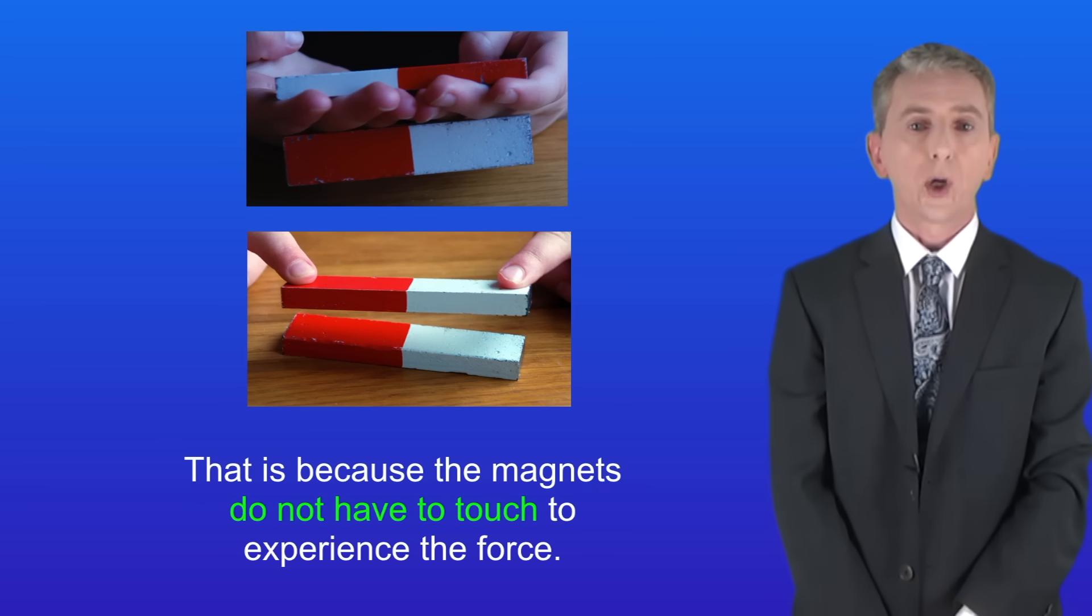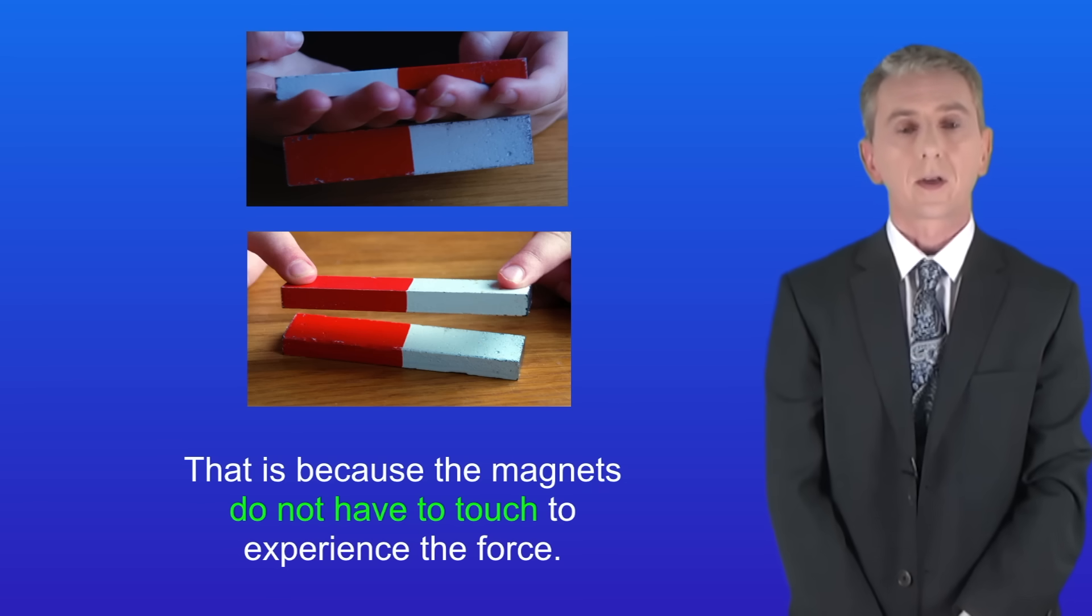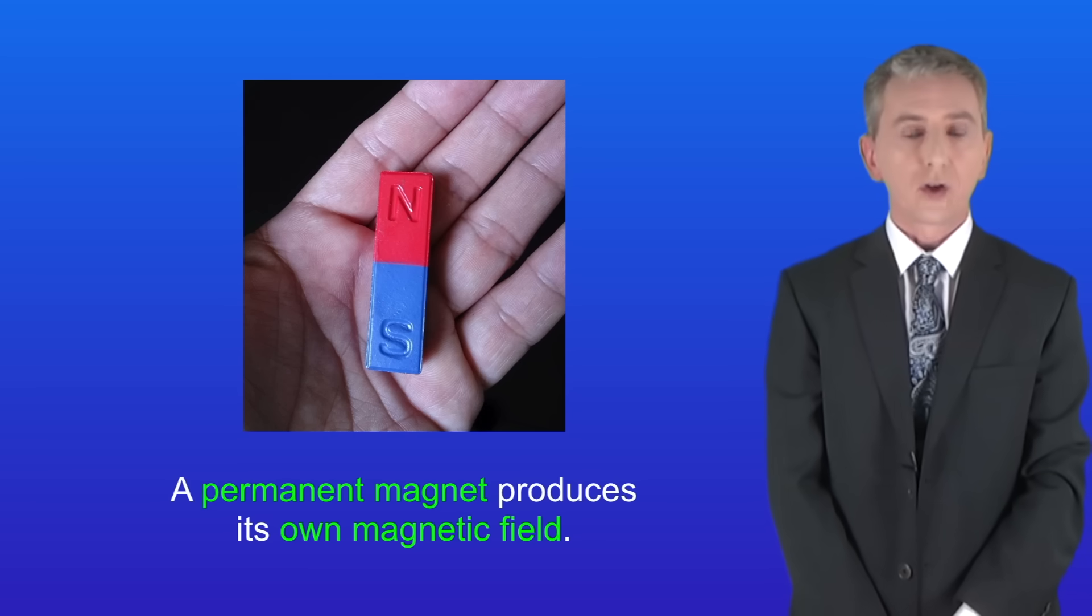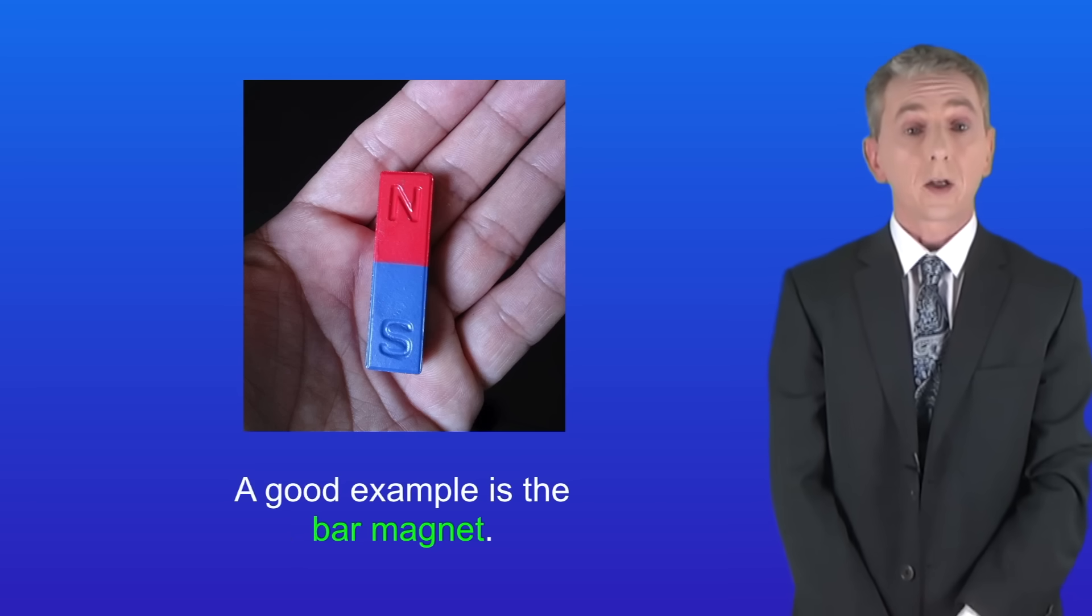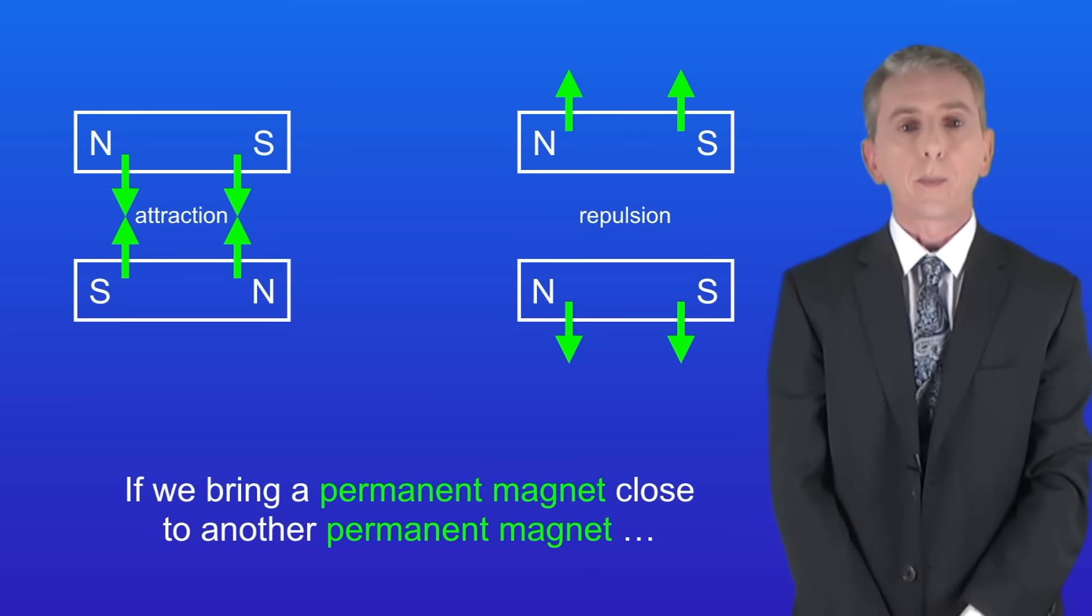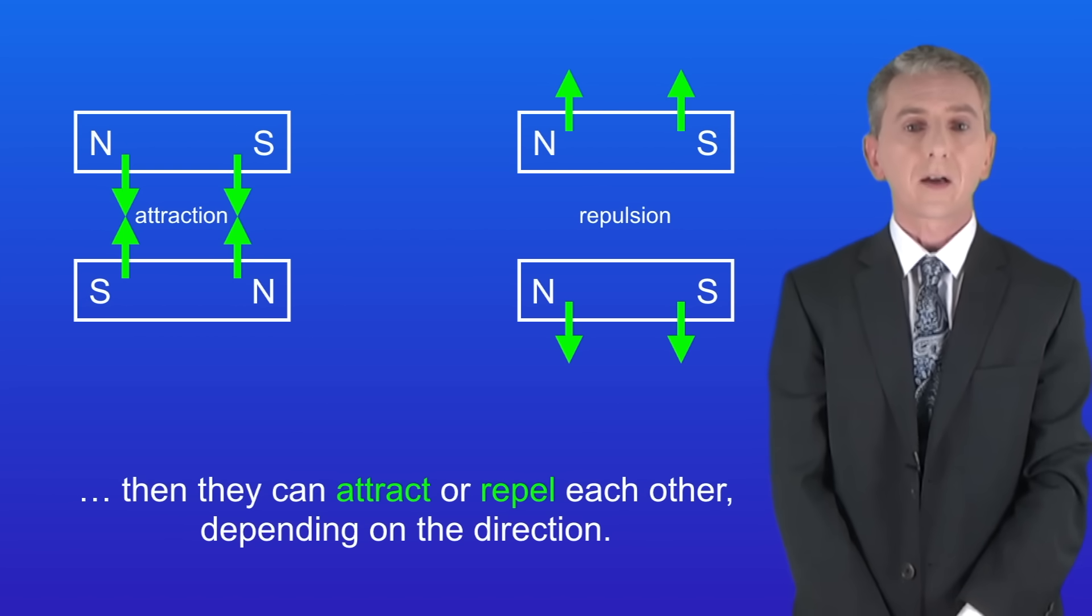A permanent magnet produces its own magnetic field and a good example is the bar magnet that we saw earlier. If we bring a permanent magnet close to another permanent magnet then they can attract or repel each other depending on the direction.